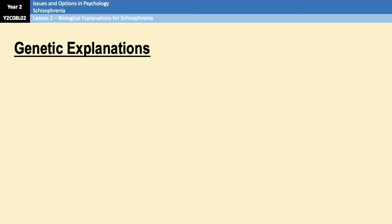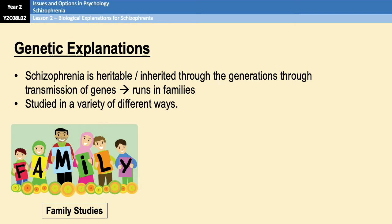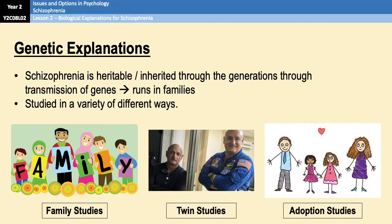When we talk about a genetic explanation for a disorder, we are suggesting that the condition runs in families — that it is passed from generation to generation via the transmission of genes. Biological psychologists tend to use three different types of research to investigate the impact of genes: family studies, twin studies, and adoption studies.